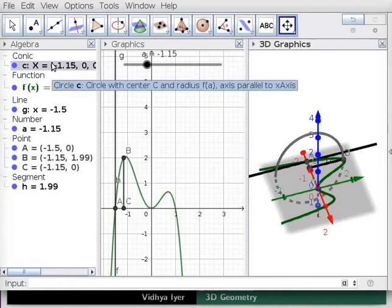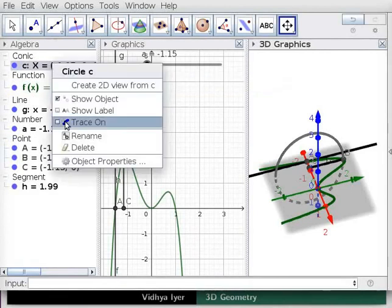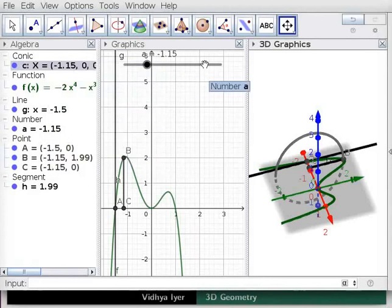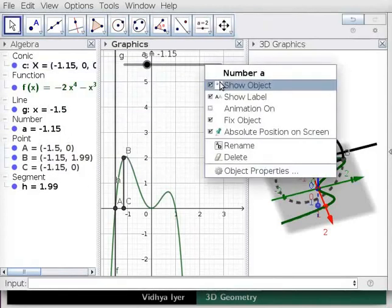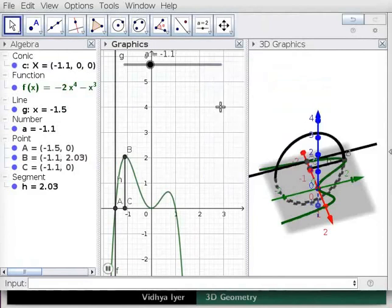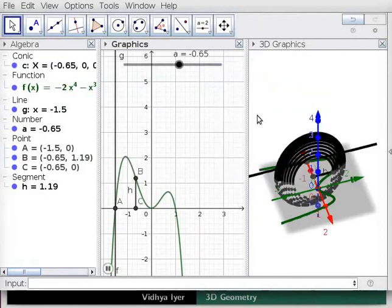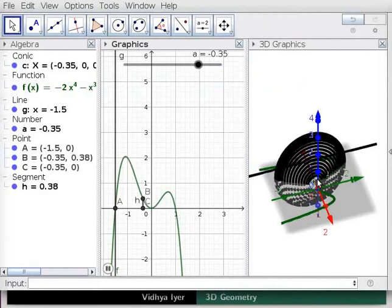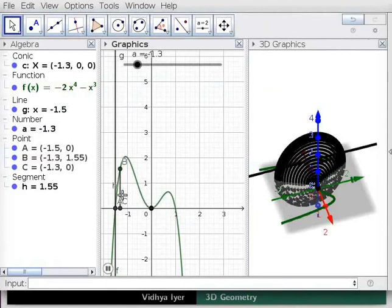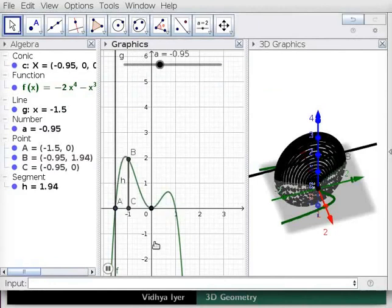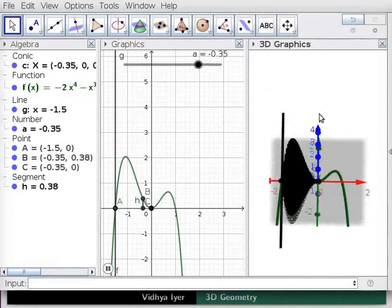In algebra view, right click on circle C and check trace on option. Right click on slider A and select animation on option. Observe the solid traced as A changes. Watch both 2D and 3D graphics views. Segment BC moves between the x-axis and function F. The part of function F that is in the second quadrant in 2D rotates around the x-axis. Drag 3D graphics to see it from another angle.